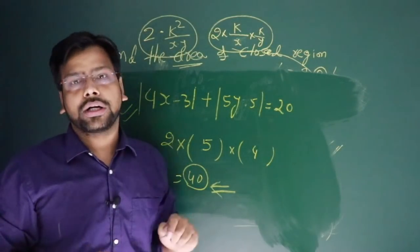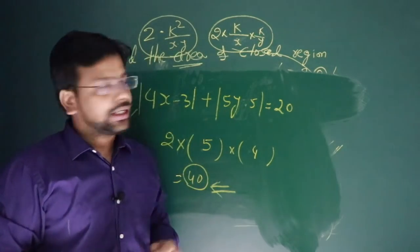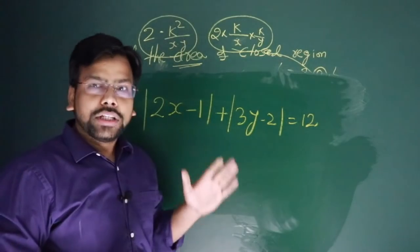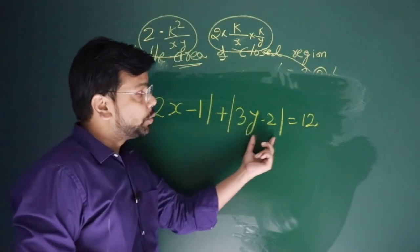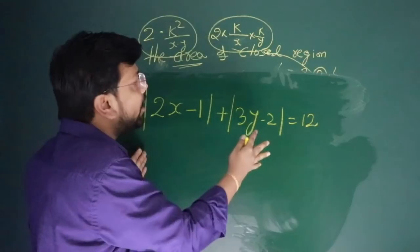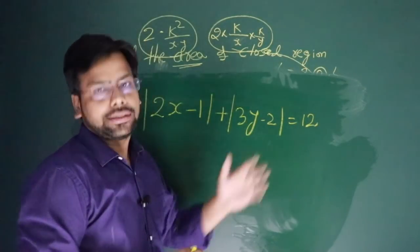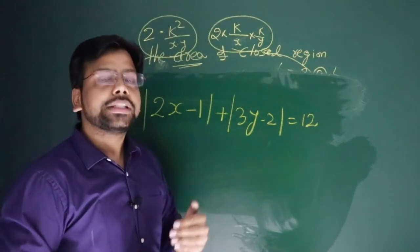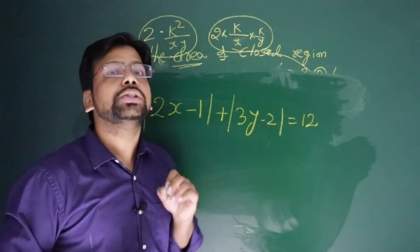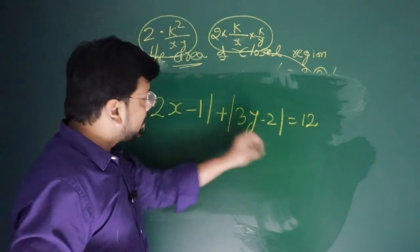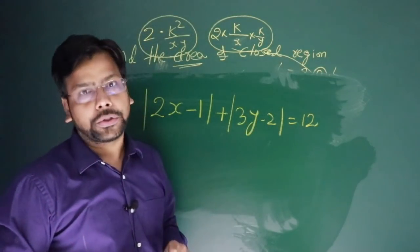I'm giving you homework. Please post your answer in the comments. This is your homework: |2x-1| + |3y-2| = 12. What is the area of the bounded region by this graph? Please pause the video, post your answer in the comments, and use your pen and paper. Note down this most important concept for you.